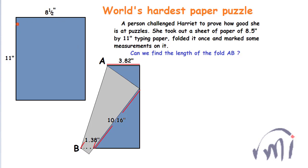This is the paper, width 8.5 inches and length 11 inches. She has folded that paper like this and put some markings over it. This length is 3.82 inches, length from this point to this point is 10.16 inches, and the length from point B to here is 1.38 inches. We have to find the length AB.